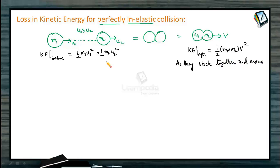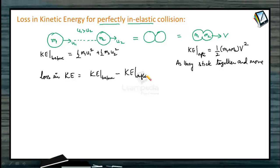We have kinetic energy before collision and kinetic energy after collision. If we take the difference — kinetic energy before collision minus kinetic energy after collision — and this is positive, then initial energy is more than the final energy, meaning there is a loss. If kinetic energy before collision is less than after, there is a gain. We will calculate loss in kinetic energy.